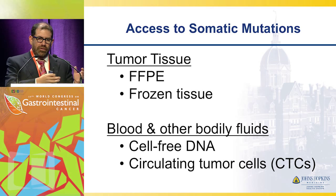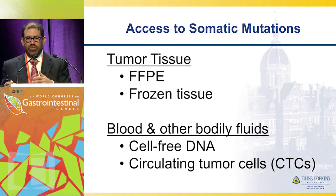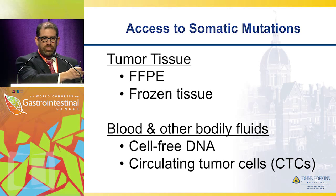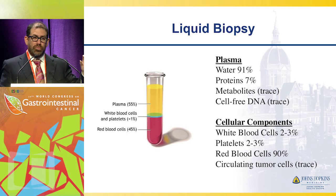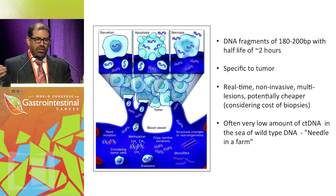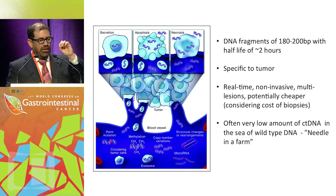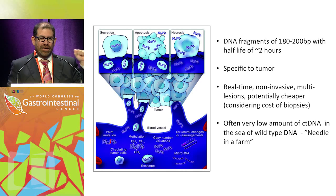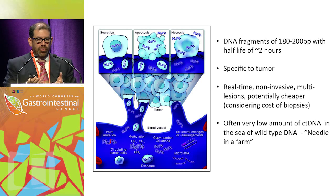Mutations can be identified in tumor tissue — either formalin-fixed and preserved, as in about 90% of cases, or from frozen tissue. More recently we're looking at liquid biopsies: finding the equivalent of what we find in tissue from a blood draw. That can be from the cellular component, containing circulating tumor cells, or from the plasma component, which contains small fragments of DNA. These fragments are released into circulation — actively secreted in exosomes, or released when cells undergo apoptosis or necrosis.